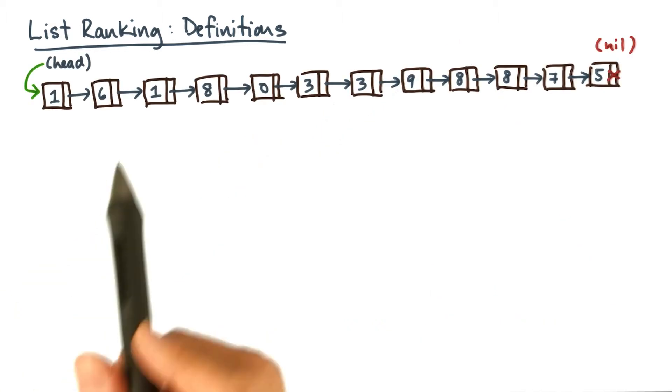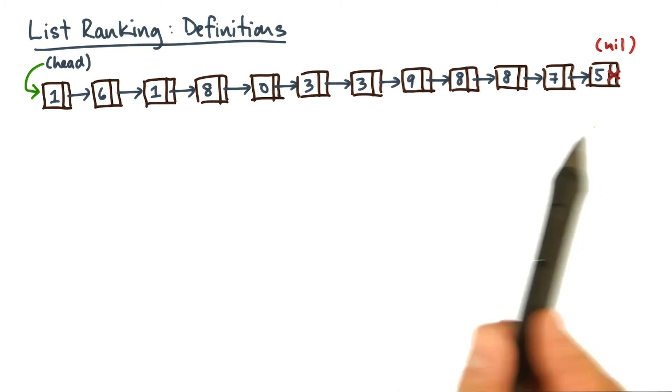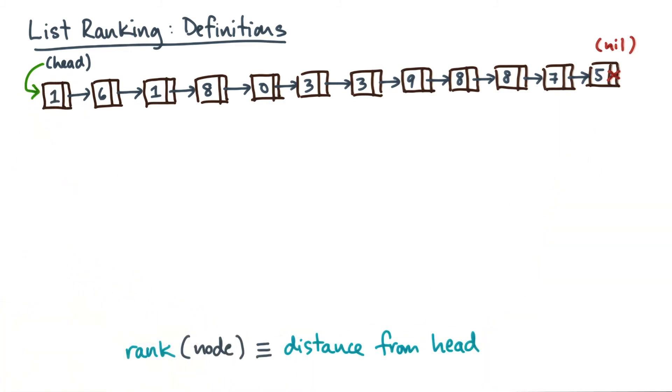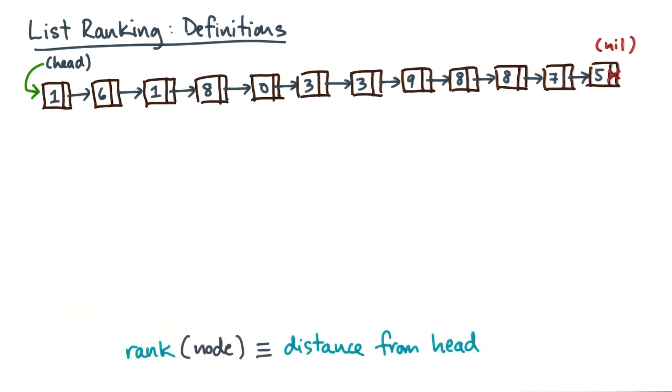Now suppose I give you a collection of values stored as a singly linked list with a head pointer. The list ranking problem asks for the distance of every node from the head.